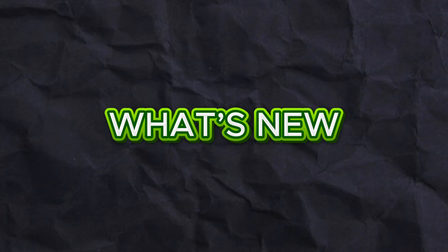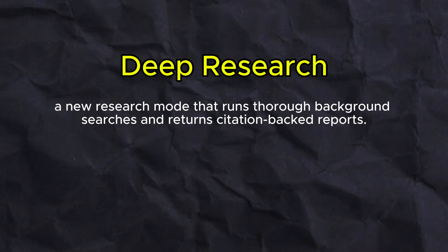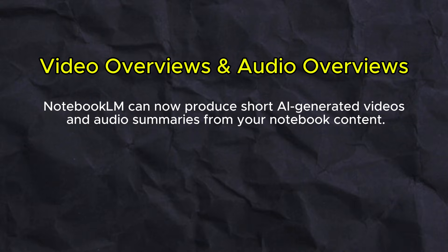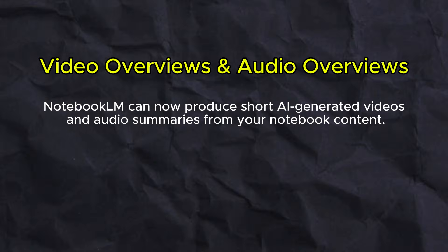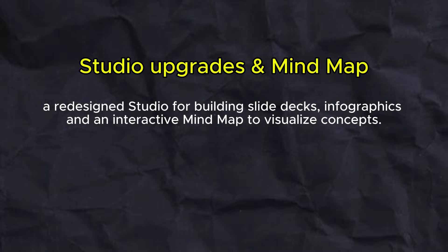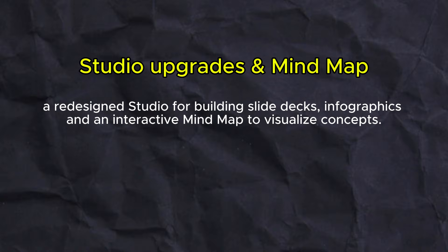Here's a quick summary of the biggest changes. Number one is deep research — a new research mode that runs background searches and returns citation-backed reports. Number two is video overviews and audio overviews, where Notebook LM can now produce short AI-generated videos and audio summaries from your notebook content. Next is the studio upgrades and mind maps — a redesigned studio for building slide decks, infographics, and an interactive mind map to visualize concepts.